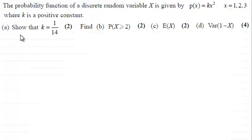We've got to show that k equals 1/14th for 2 marks, then find in part (b) the probability that X is greater than or equal to 2 for 2 marks. In part (c), E(X) for 2 marks, and finally in part (d) the variance of 1 minus X for 4 marks.